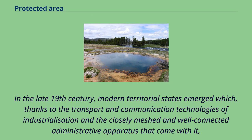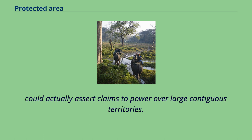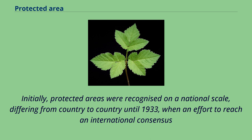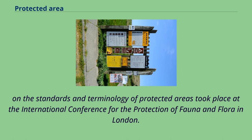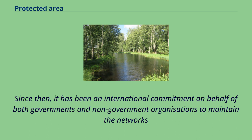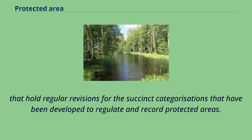In the late 19th century, modern territorial states emerged which, thanks to transport and communication technologies of industrialization and a well-connected administrative apparatus, could assert claims to power over large contiguous territories. The establishment of nature reserves in mostly peripheral regions thus became possible and underpinned the new state claim to power. Initially, protected areas were recognized on a national scale until 1933, when an effort to reach international consensus on standards and terminology took place at the International Conference for the Protection of Fauna and Flora in London.